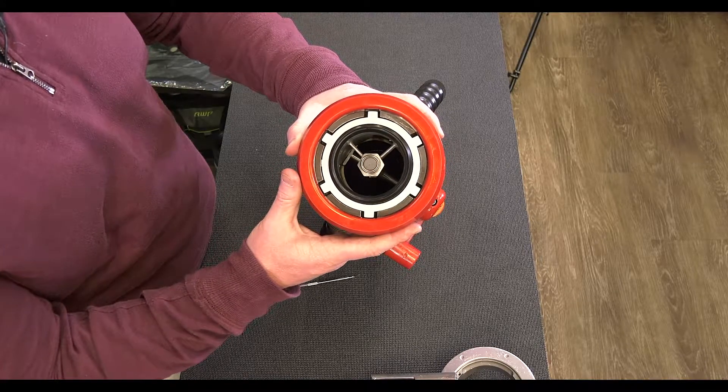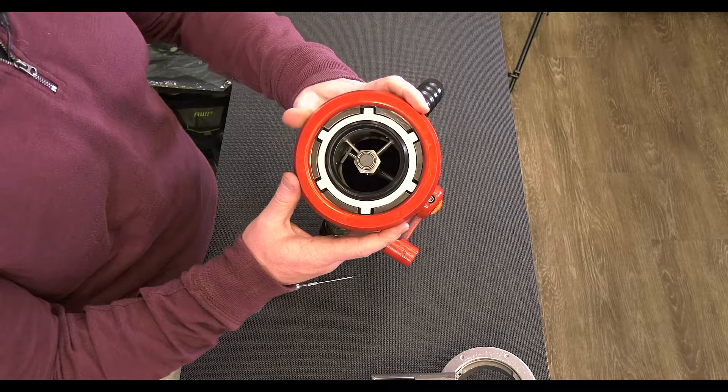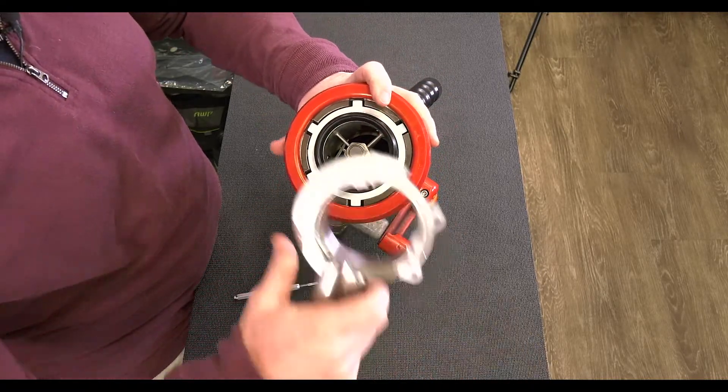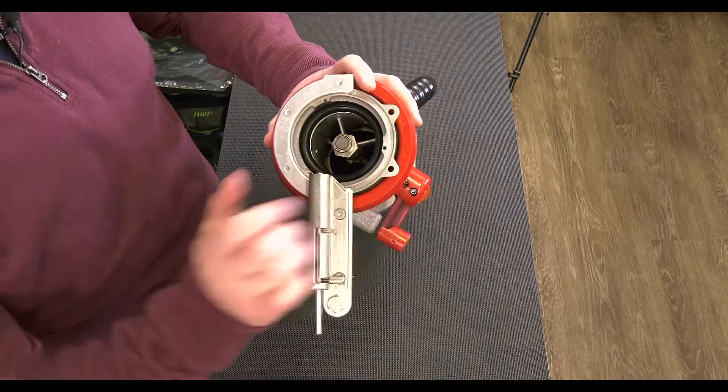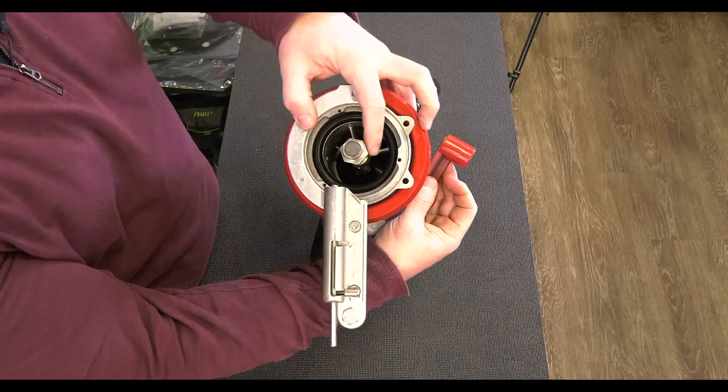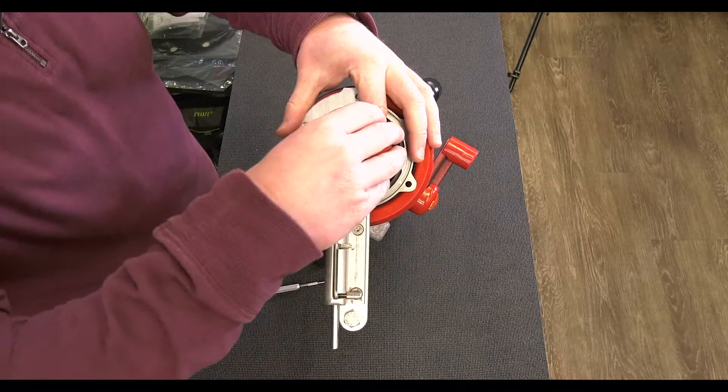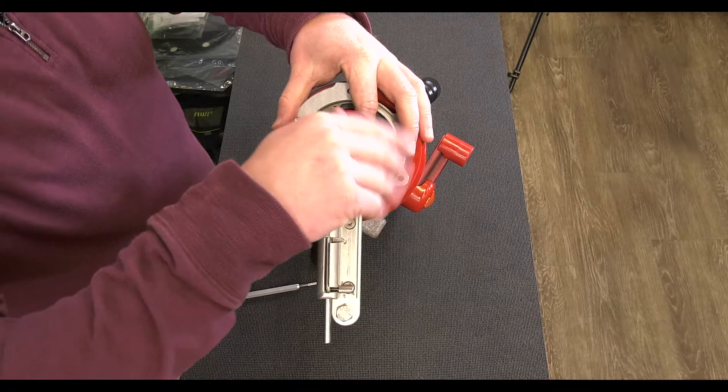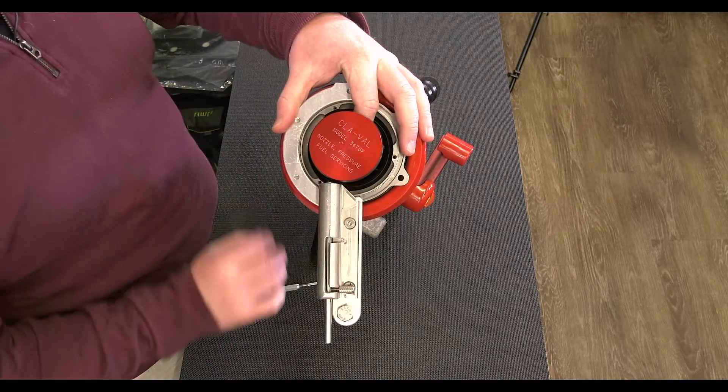Now that that's in, what we'll do is put our poppet on. So we need to put our key back on, open our nozzle up, and tighten our poppet.